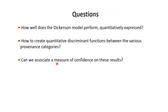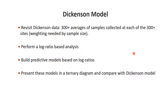The Dickinson model, while quantitative in form, was also qualitative in the sense that data was grouped by visualization. The question is: can we create more quantitative discriminant functions with a measure of confidence? The regions drawn by Dickinson were not necessarily drawn with statistical confidence, and some regions may be more reliable than others.